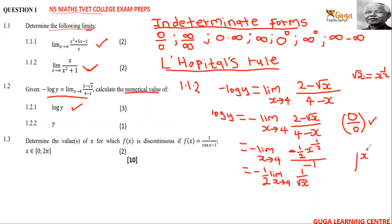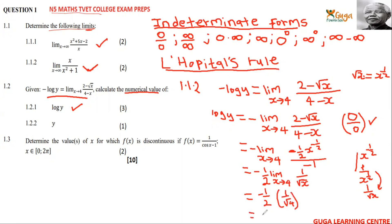Substituting x = 4 into the limit: we get negative 1/2 multiplied by 1 over √4, which is 1/2. So negative 1/2 times 1/2 gives the answer negative 1/4.